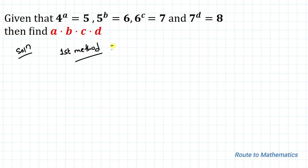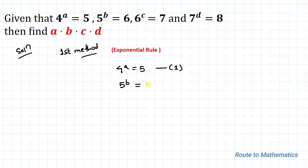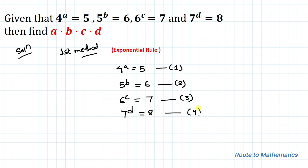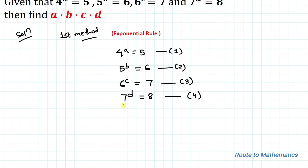Without any delay, let's start the solution. In my first method I am going to use the exponential rule. Our first equation is 4 to the power a equals 5. Our second equation is 5 to the power b equals 6. Our third equation is 6 to the power c equals 7. And our fourth equation is 7 to the power d equals 8.